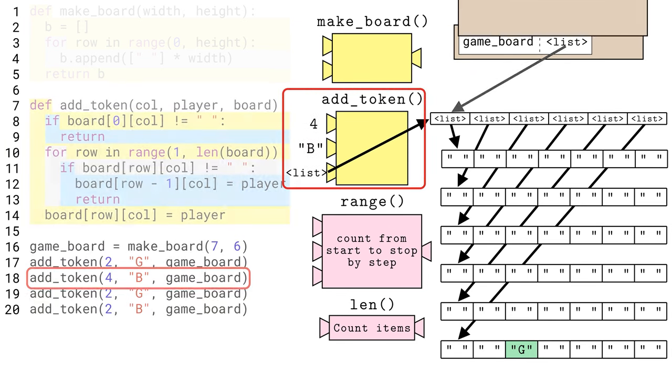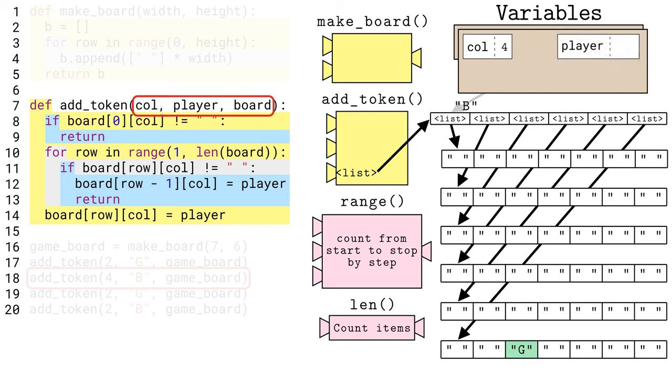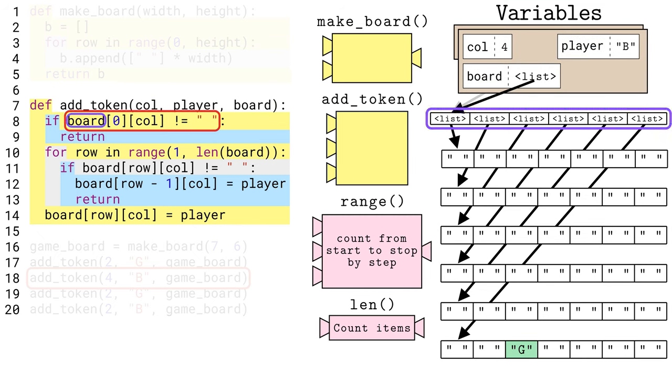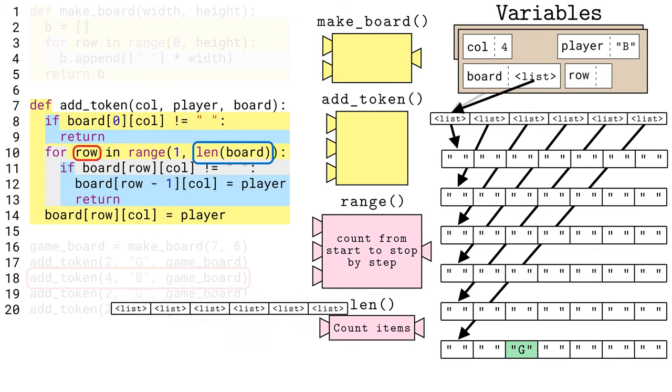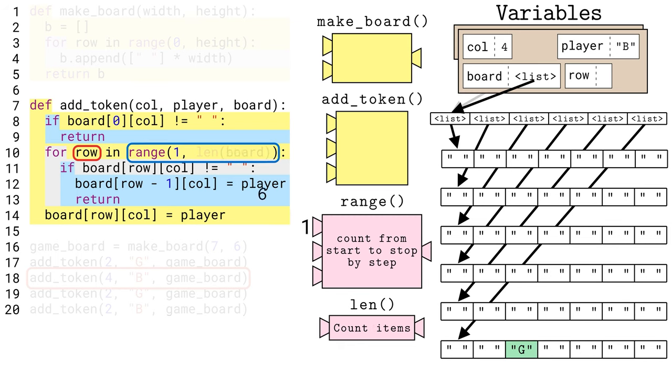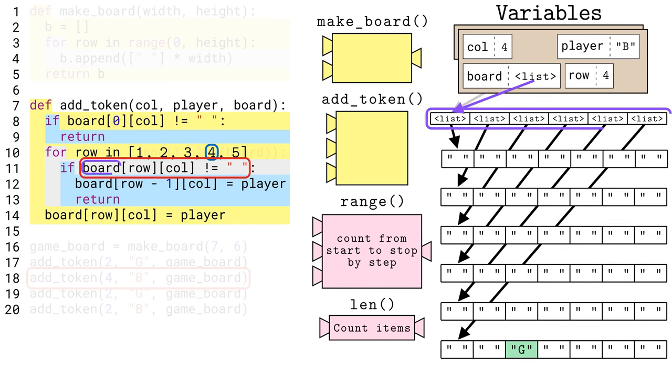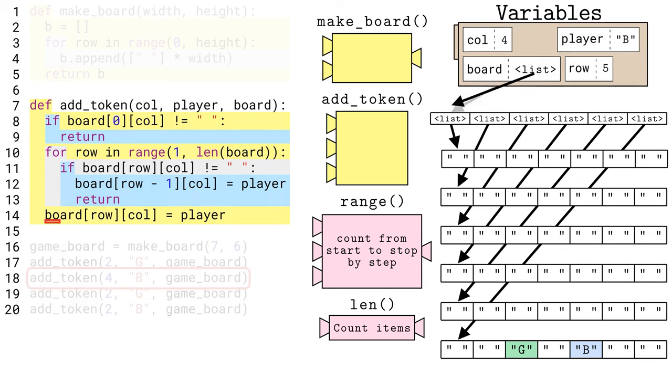When the blue or b player places their token in column index 4, the code plays out very similarly. The key difference is that the call variable is 4 this time. The range expands to the same thing as before, because the number of rows in the board has not changed. When the loop completes, again, unable to find an existing token in column index 4, the b token is placed in the bottom row for that column, and the code returns.